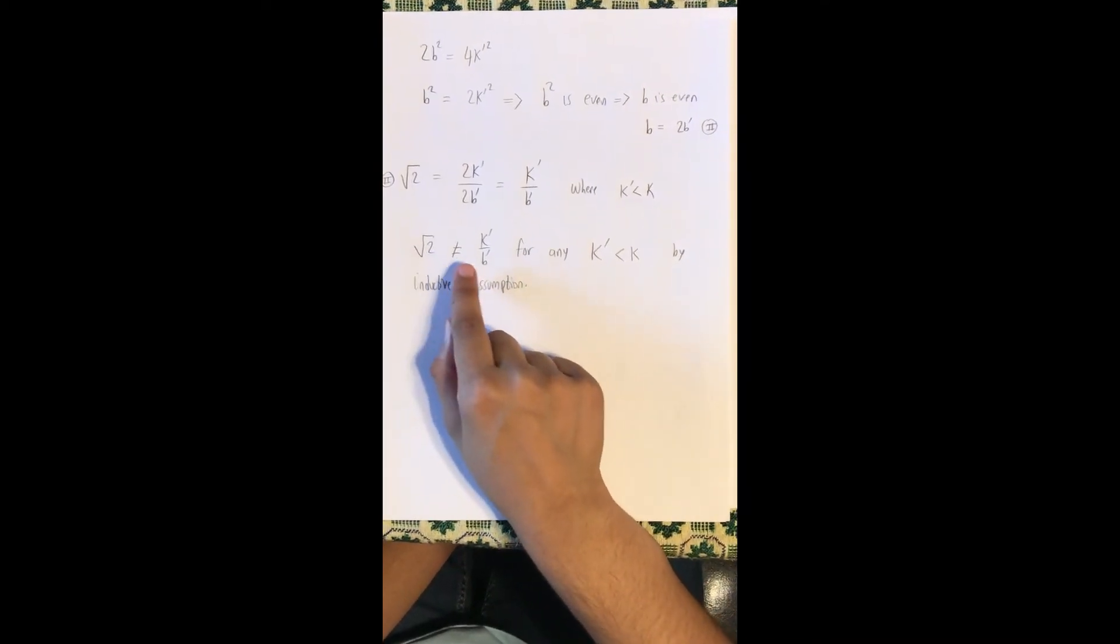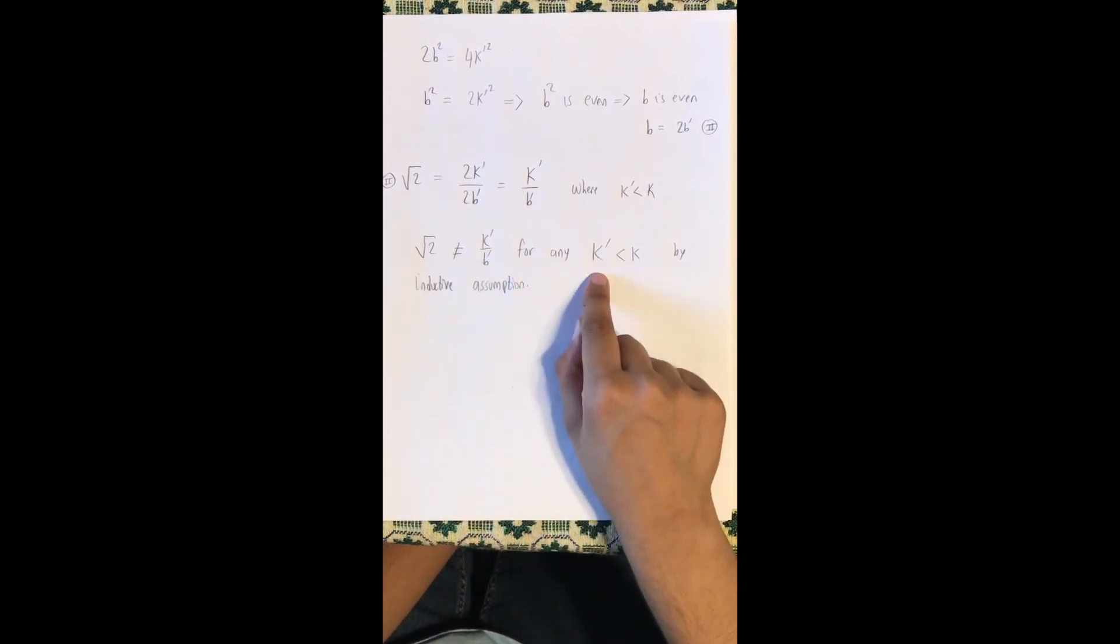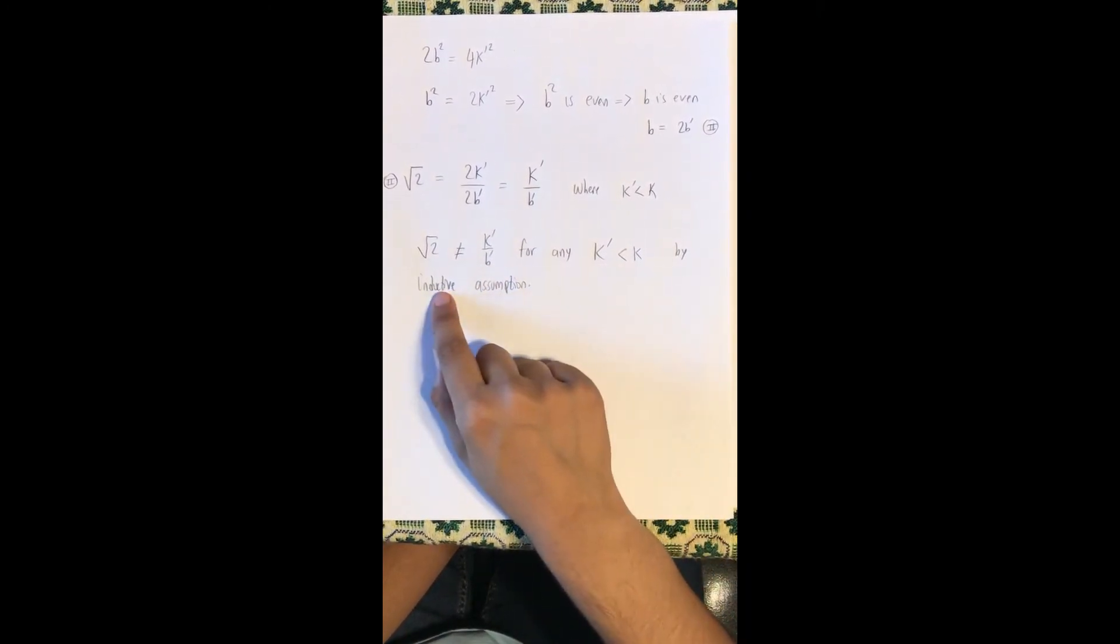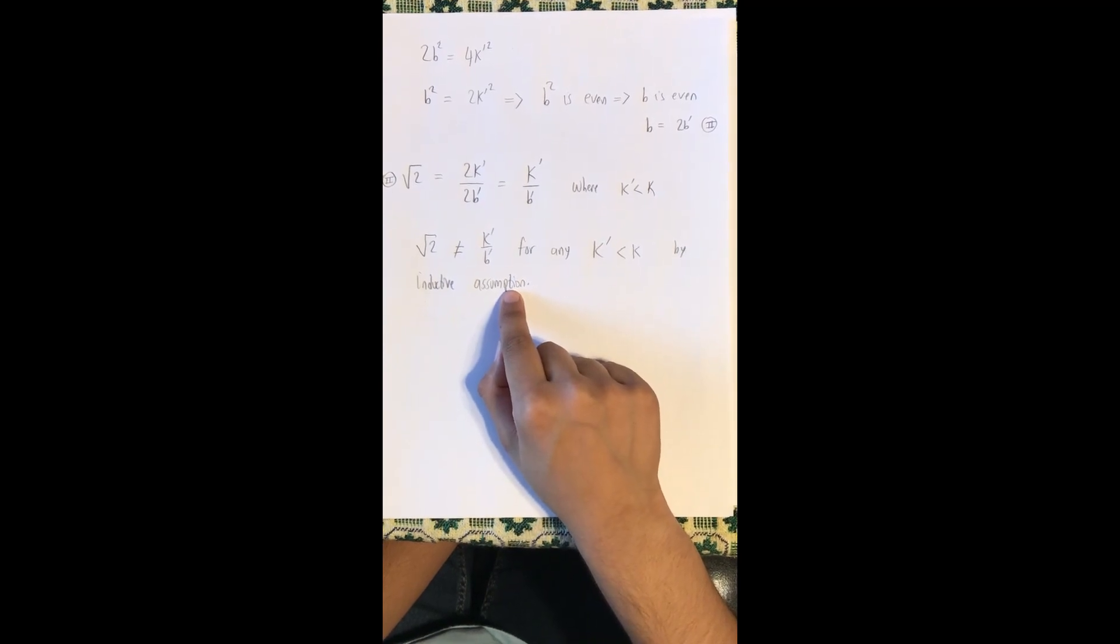Square root of 2 is not equal to k prime over b prime for any k prime less than k by inductive assumption. As a result, we get a contradiction.